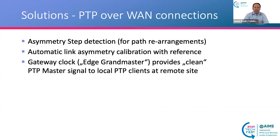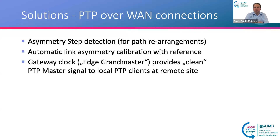Another solution is to have asymmetry step detection built into the PTP slave. For path rearrangements where the route from master to slave changes and causes a step in the offset, this step can be detected by the slave and taken care of. If you have the possibility to do a calibration on the slave side against a reference, this can also remove the constant time error on the slave side.